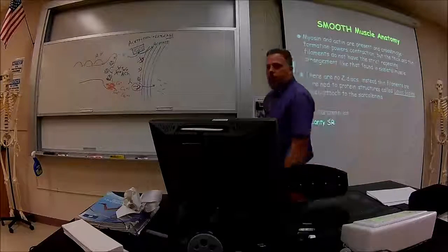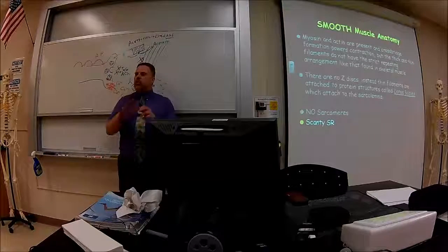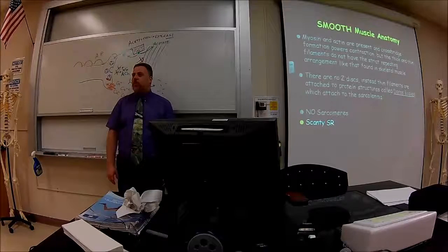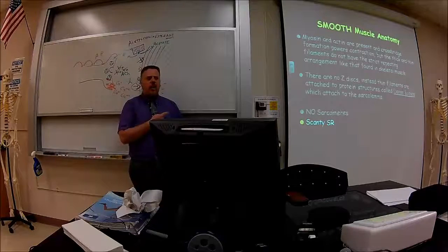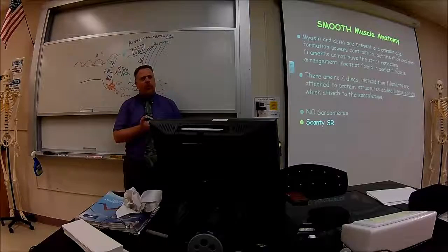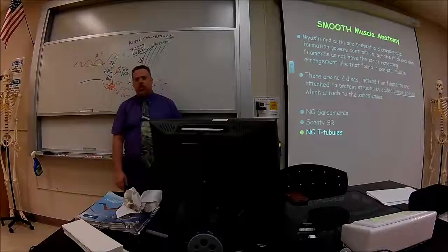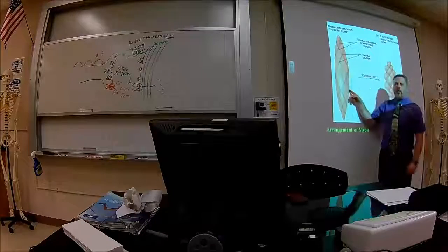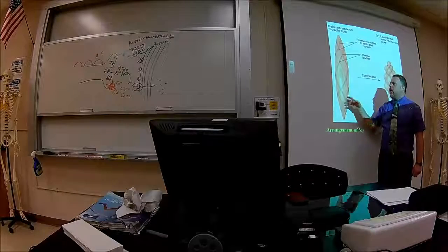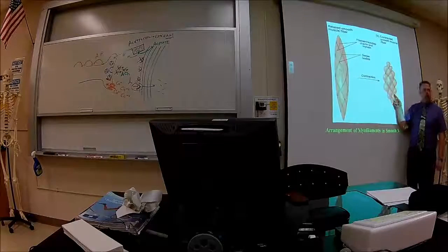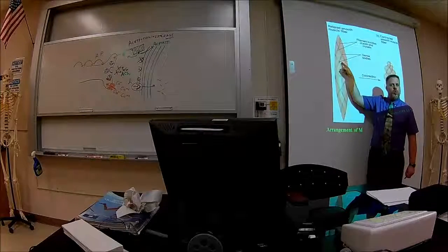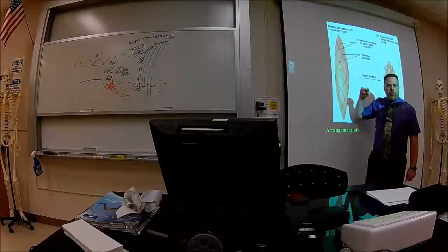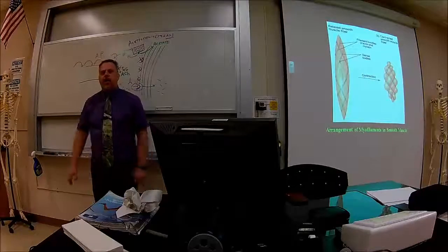Smooth muscle has no sarcomeres, no Z-discs, and very few scattered sarcoplasmic reticula. There are also no T-tubules. Since the sarcoplasmic reticulum is scarce, calcium for contraction must come from somewhere else. Smooth muscle cells are fusiform (football-shaped) — the dense bodies are where the actin and myosin filaments crisscross. This arrangement is why we don't see striations in smooth muscle.